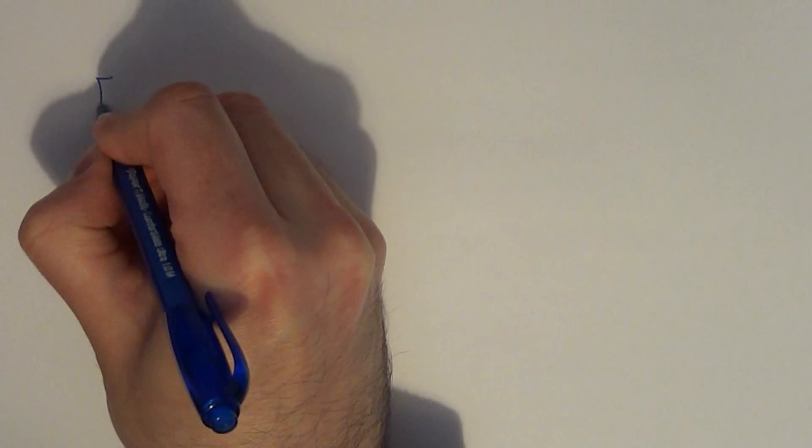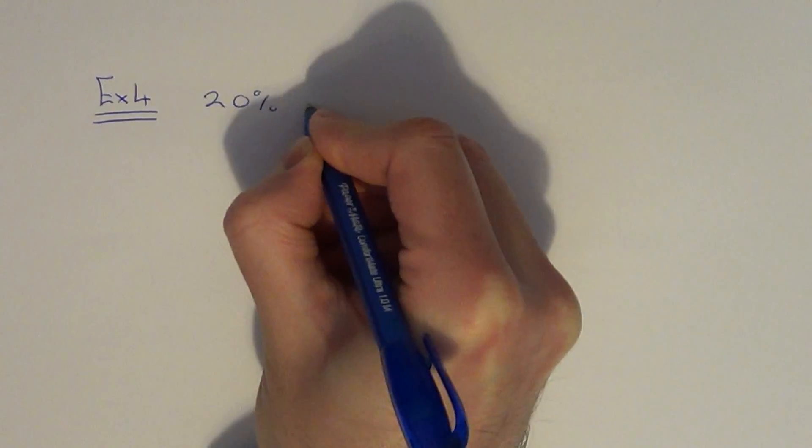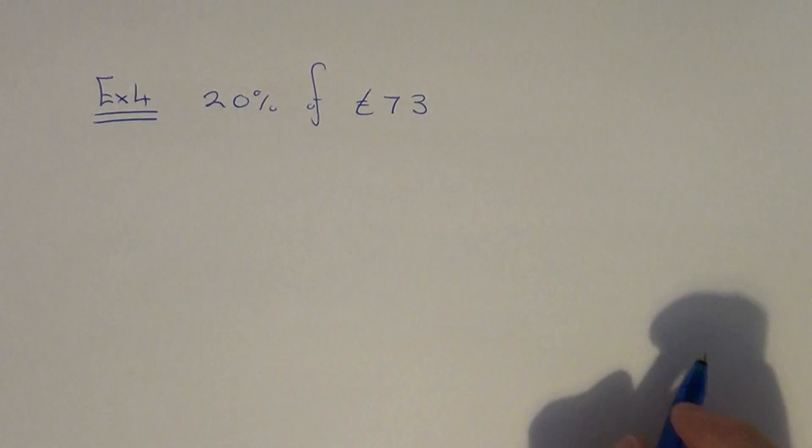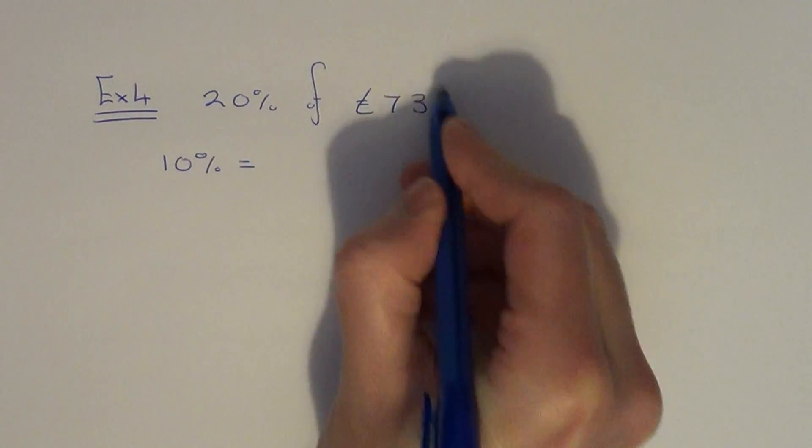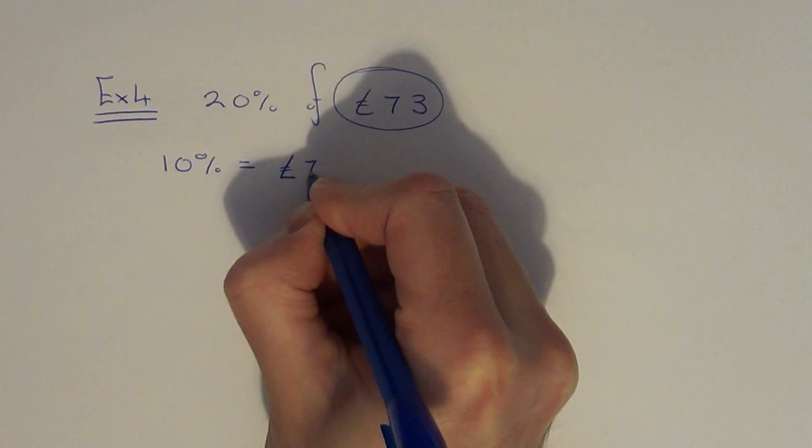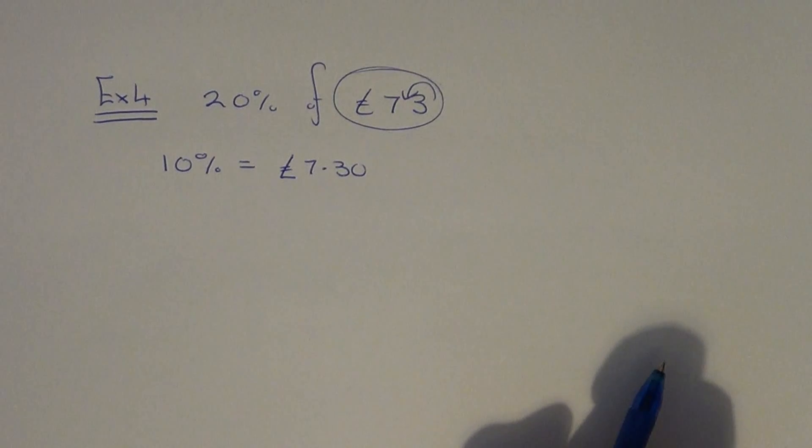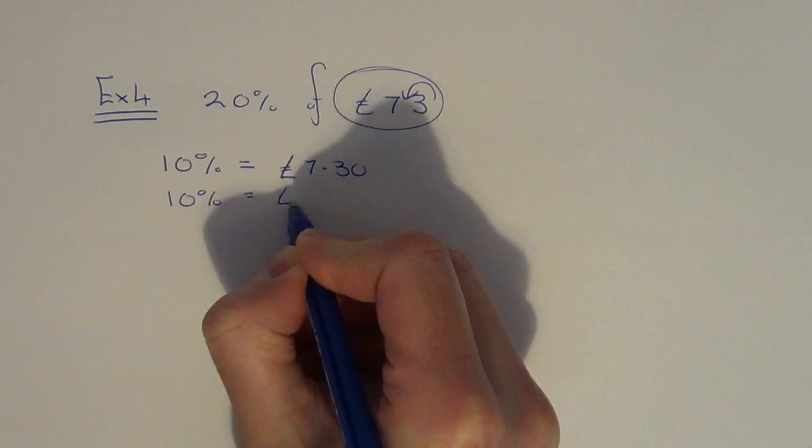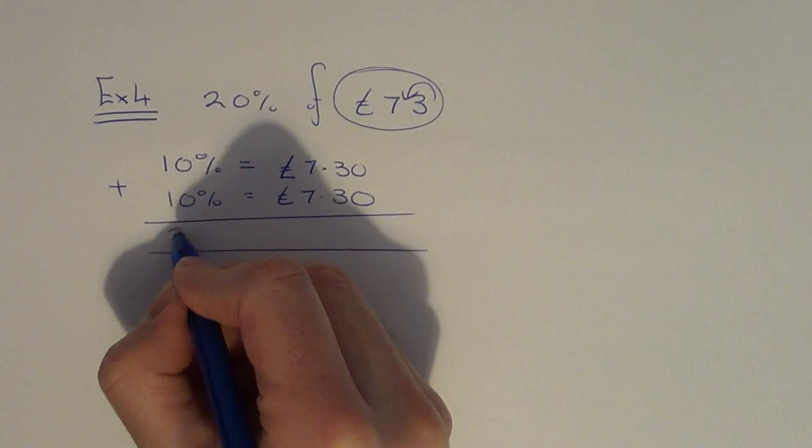Example four. This time let's go with 20% of £73. So again just start off with 10% of £73 is £7.30. Again just move your decimal point in because there isn't a zero to take off.